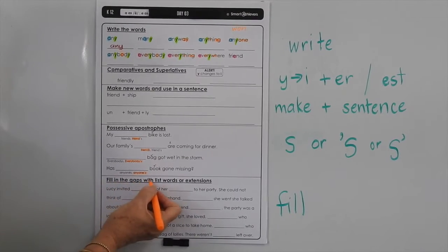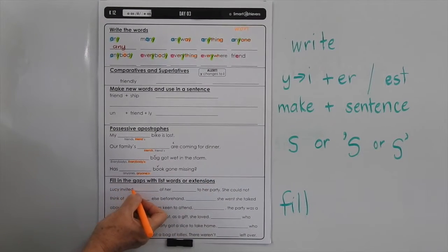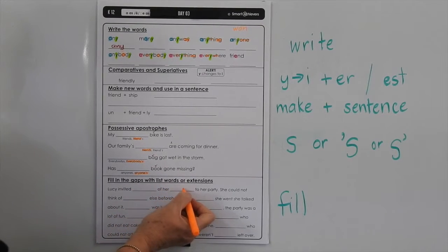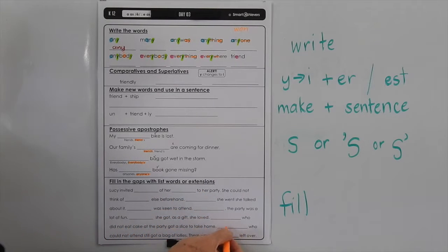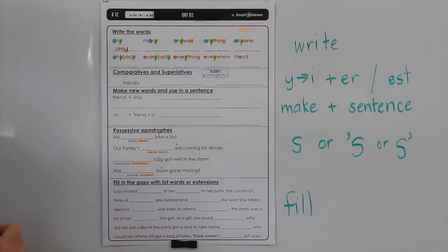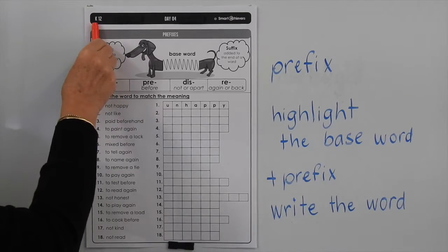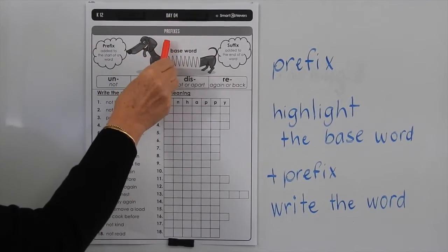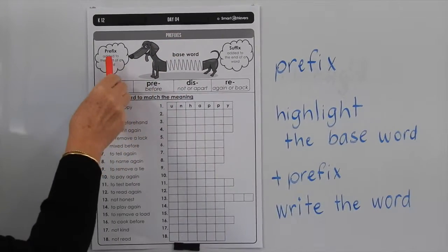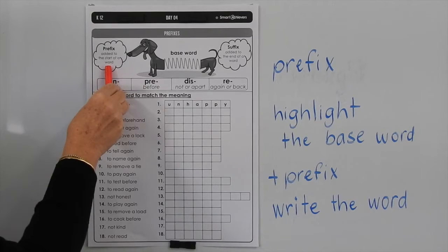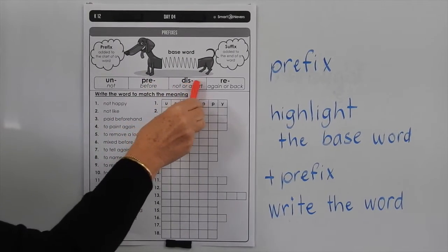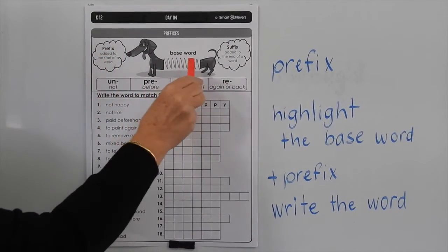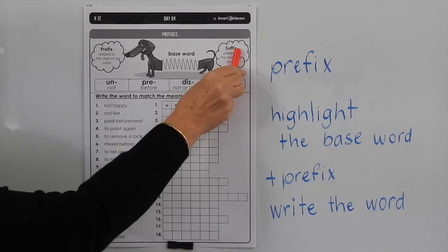Down the bottom it says fill in the gaps with the list word or extensions — 'Lucy invited something of her something to her party' — you can work out those missing words. It's a whole story to fill in. This is level K, list 12, doing the day four page, and it's about prefixes today. A prefix is added to the start of a word — the prefixes here are 'un,' 'pre,' 'dis,' and 're.' They all go at the start of a word. If you're adding something to the end of a word, it would be a suffix, and that changes quite often the function of a word.